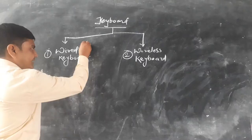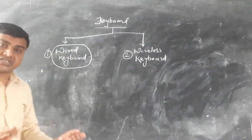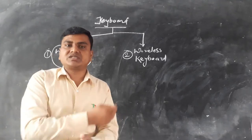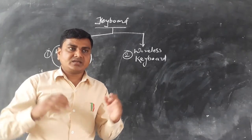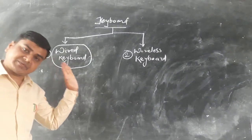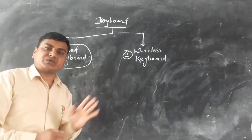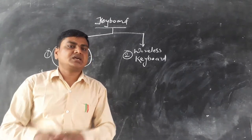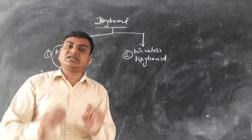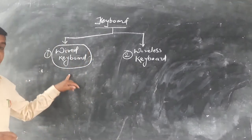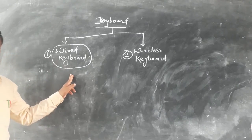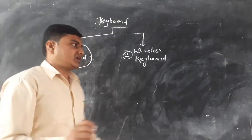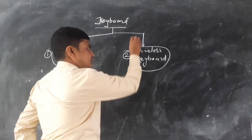Let's discuss about wired keyboard first. Wired keyboards are those which we connect to our computer with the help of a USB device or wire. The keyboard which has a wire, and with the help of that we connect it to our computer using USB technology or PS2 technology — these are known as wired keyboards. The keyboard that is attached to our computer without using any wire is known as a wireless keyboard.